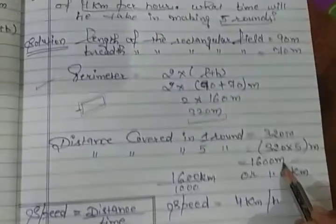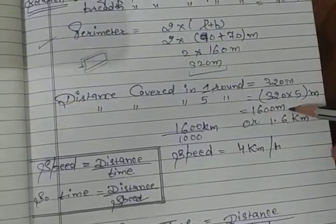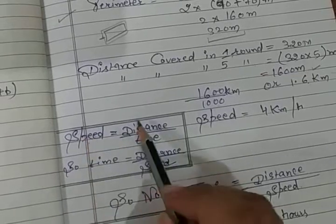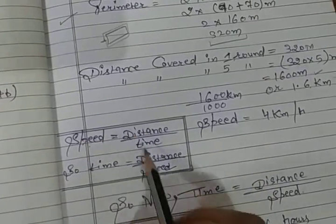Now you can see that you have speed here and distance also here. What will be the formula? You know the basic formula of speed: that is distance over time, and time is distance over speed.